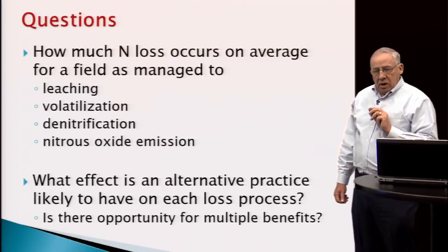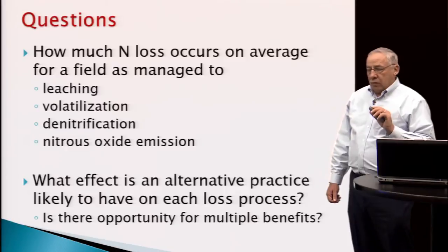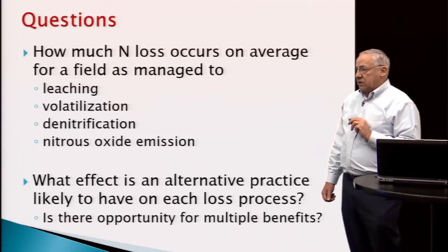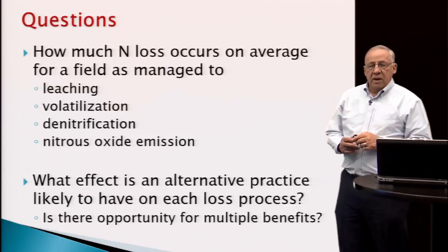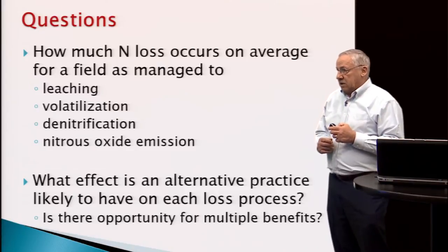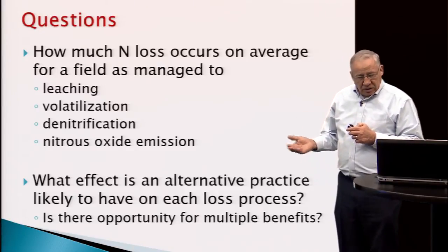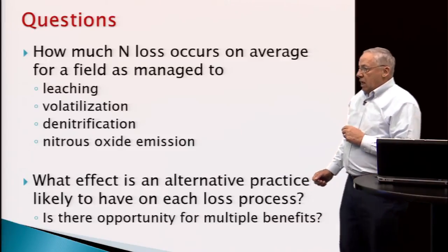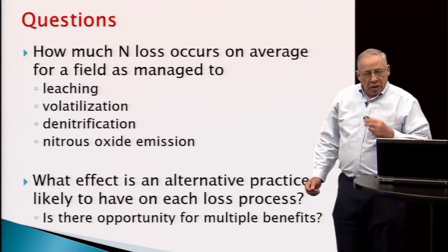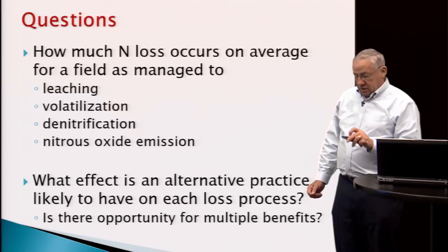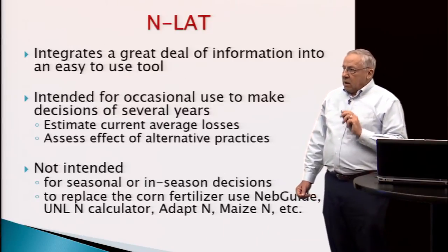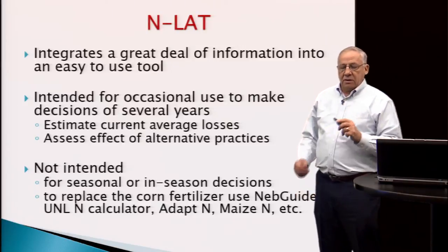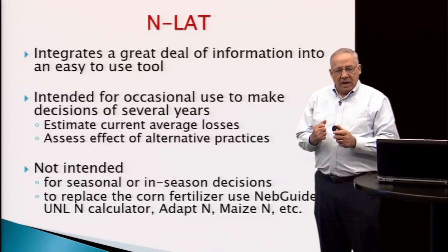The tool is intended to help us ask two questions: how much nitrogen loss on average occurs for a field as it's managed — to leaching, to volatilization, to denitrification, and to nitrous oxide emission — and what is the effect of an alternative practice on each loss likely to be? Is there an opportunity for multiple benefits, that is, impacting more than one loss at a time with some management practices?